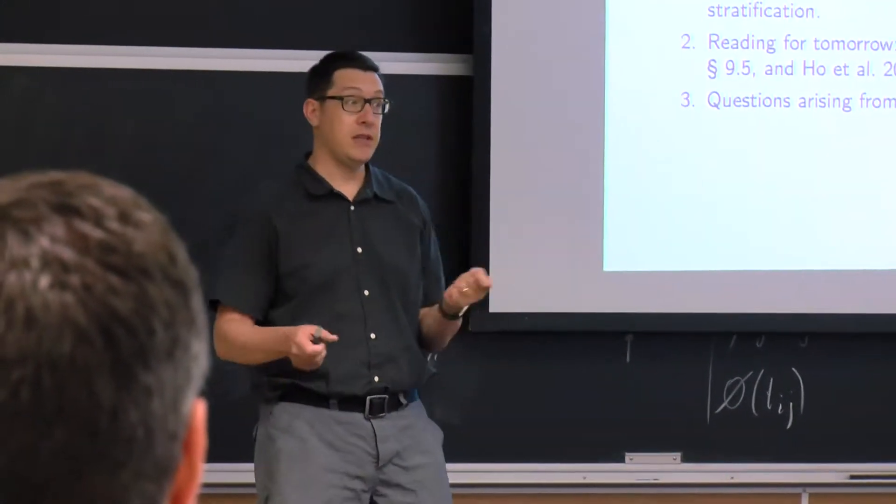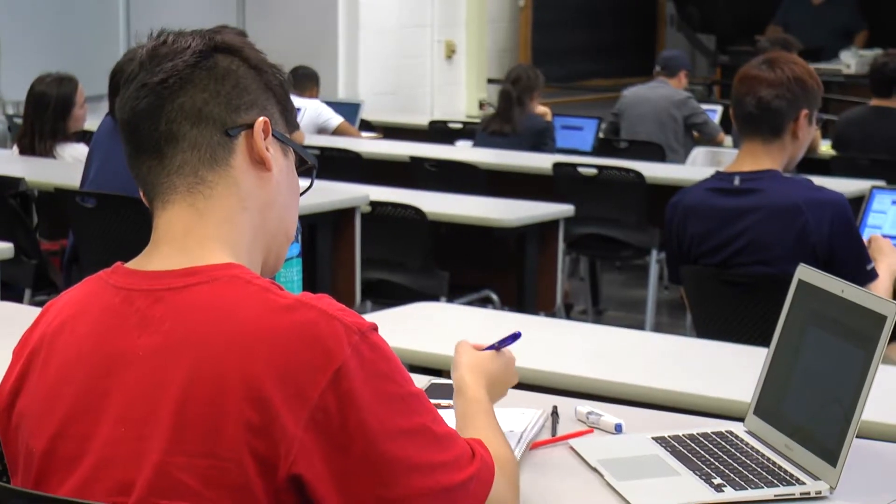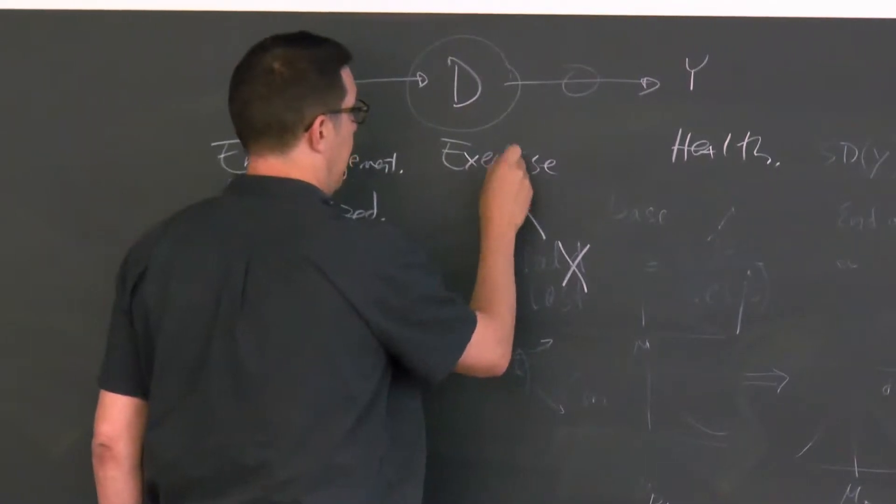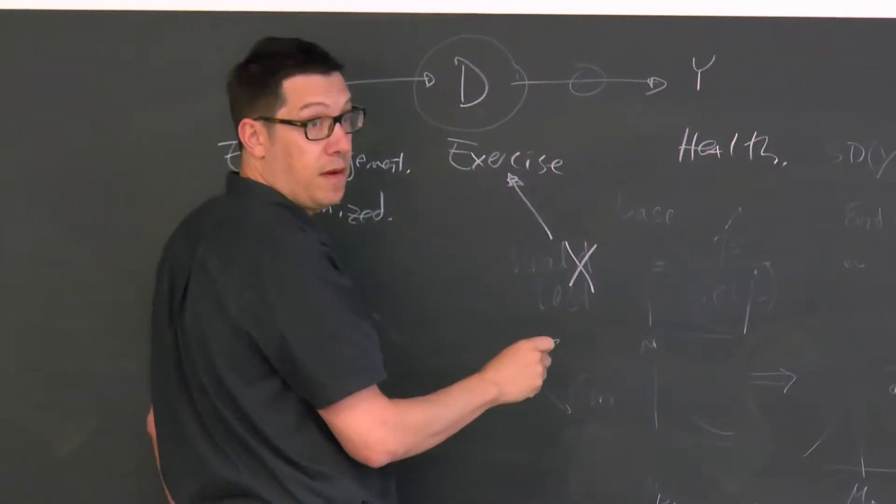I teach the course in causal inference for the ICPSR summer program. In our course, we want to help students learn how to make fair comparisons. We begin by talking about randomized experiments, because randomized experiments are an excellent way to do this. If you've randomized, you know that your comparison is fair. When you can't randomize, which is quite common, then the question is how do you construct these comparisons? How do you make sure that when you're comparing kids who got the curriculum change, they're no more nor less likely to be wealthy than the kids without it? So that's the whole course.